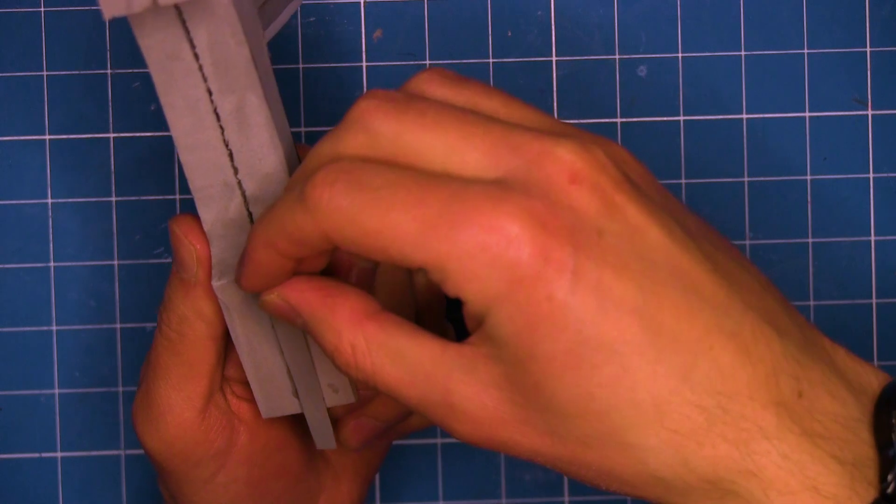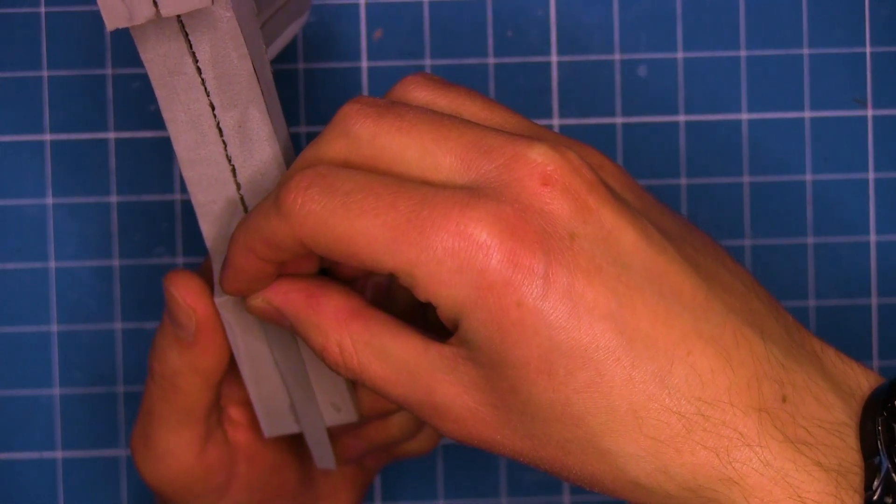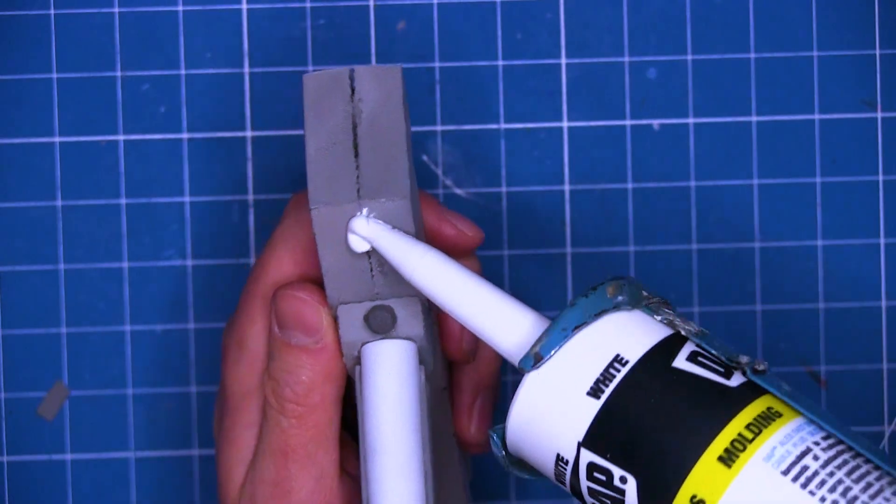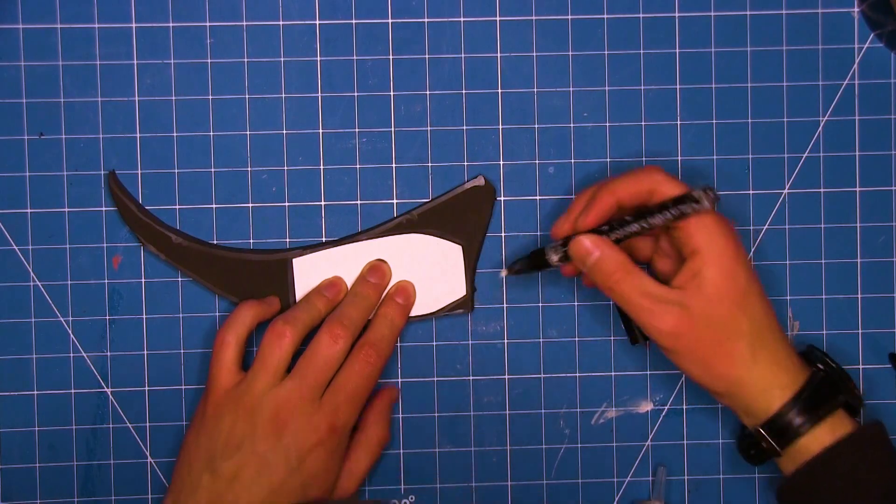There's this raised detail on the back, which is great because it covers up a seam. For the others, I'll have to use Alex Fast-Dry Putty. While that dries, I began work on Phaser 1.